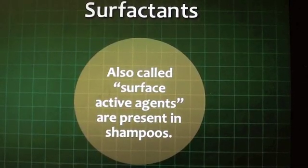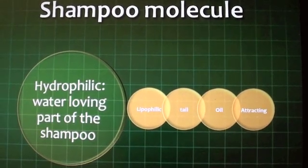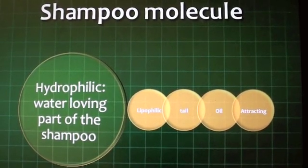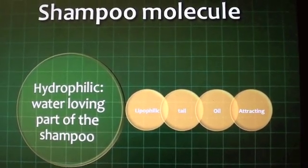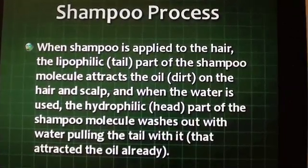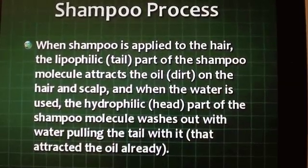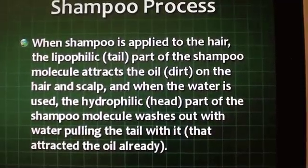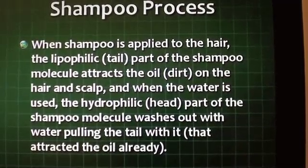Surfactants, also called surface active agents, are present in shampoos. The shampoo molecule is divided into two parts: hydrophilic and lipophilic. The hydrophilic part is the water-loving head of the shampoo molecule. The lipophilic tail is the oil-attracting part. When shampoo is applied to hair, the lipophilic tail attracts oil and dirt on the hair and scalp. When water is used, the hydrophilic head — the water-loving part — washes out with water, pulling the tail with it.